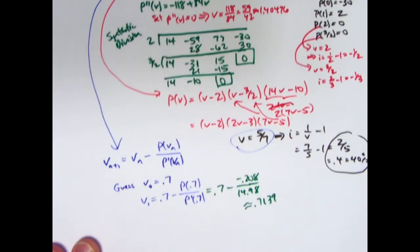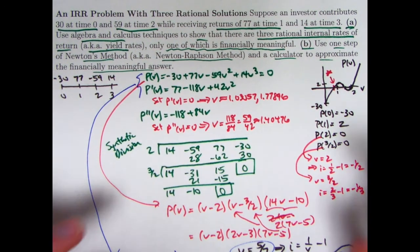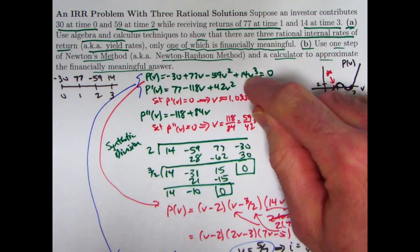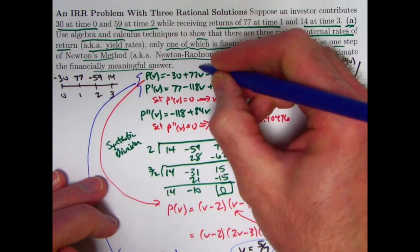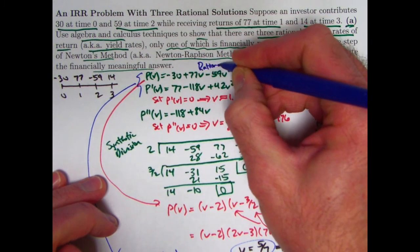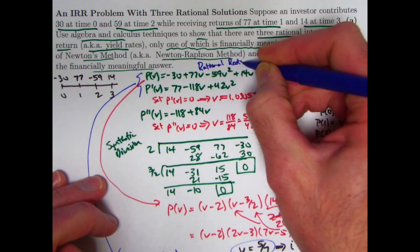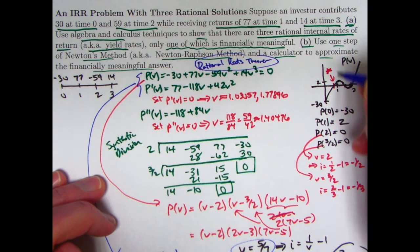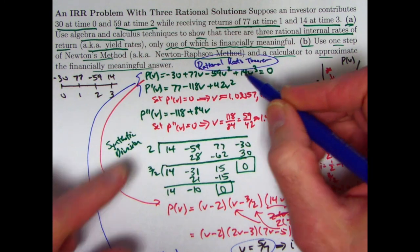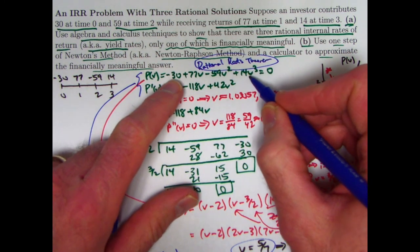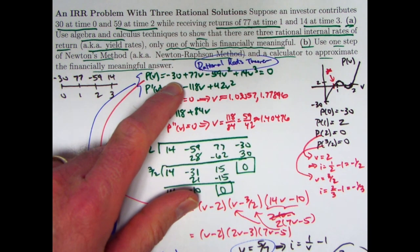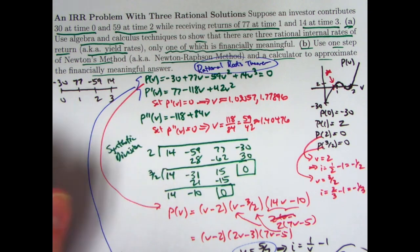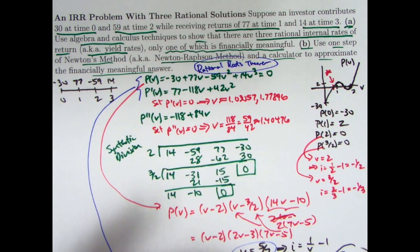Where p(v) is this function and p prime of v is this function. I'm not explaining why these methods work. The calculus one hopefully makes a lot of sense. I'm not explaining why the synthetic division works. I'm not explaining why Newton's method works. They're not too hard to explain, but you should look into that on your own if you're interested. And I'll just tell you what these end up being. You should check it on your own. You end up getting 0.7 minus approximately negative 0.208 up on top there divided by 14.98.